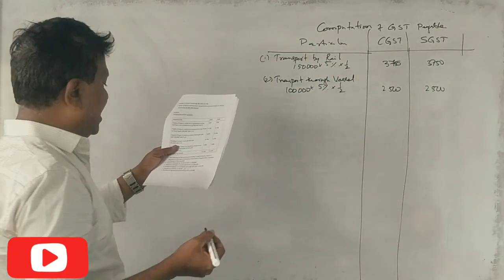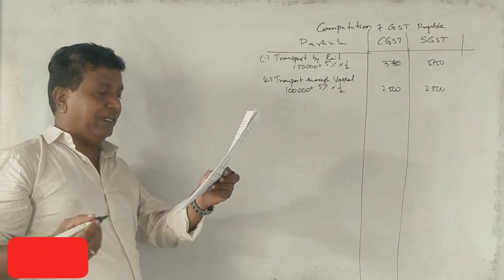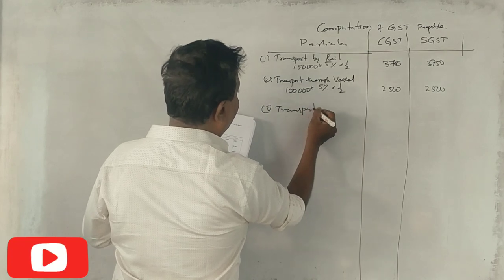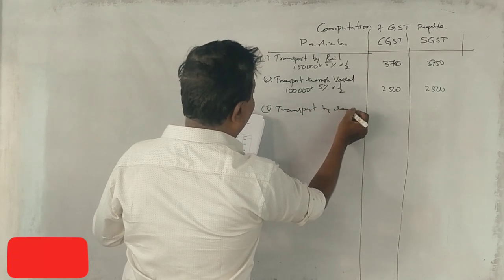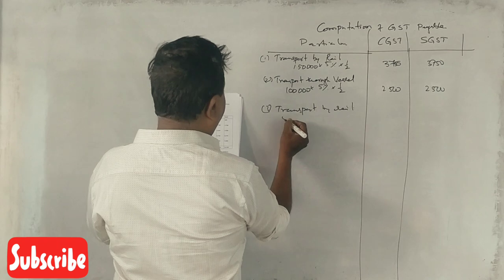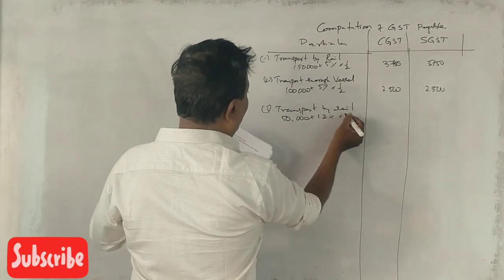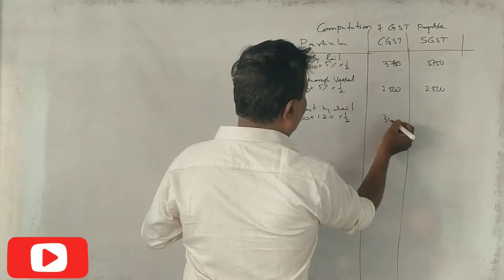Next, transport of goods in a container by rail. Transport by rail at 12%, 1 by 2, equals 3,000.